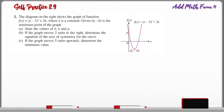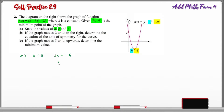Question number 2. The diagram on the right shows the graph of these functions, where k is a constant. Given that (h, negative 6) is the minimum point of the graph, state the values of h, k, and p. From the vertex form, the x-coordinate of the minimum point is positive 3, therefore h equals 3. From the vertex form, the term 2k is the minimum value equal to the y-coordinate of the minimum point. Therefore 2k equals negative 6, so k equals negative 3.